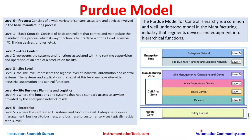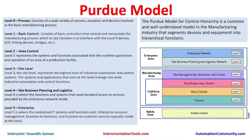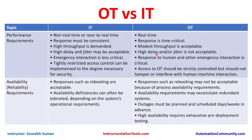We learned about the Purdue model, which starts from level zero and goes up to level five. Sometimes the safety zone is kept separate; if there is only an SIS system, safety-critical systems are placed at level zero. Each level groups similar types of systems so that similar cyber security controls can be implemented at a single level.